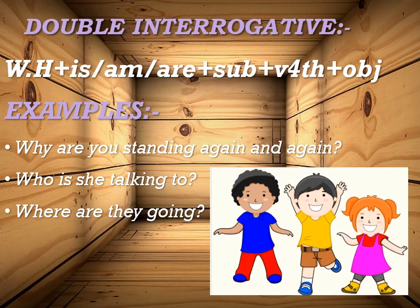So let's talk about its formula: WH word plus is/am/are plus subject plus verb fourth form plus object. Sabse pehle WH word ka use kiya jayega, then is/am/are according to subject, then subject, us ke baad verb fourth form yani ing form use ki jayegi, aur us ke baad object — object maujud ho bhi sakta hai, sentence object-less bhi ho sakta hai. Look at these examples: Why are you standing again and again? — Tum baar baar kyun khade ho rahe ho? Who is she talking to? — Woh kisse baat kar rahi hai? Where are they going? — Woh kahaan ja rahe hain? In sentences mein why, who, where — ye WH words hain. Uske baad is/are ka use according to subject kiya gaya hai, then subject add kiya gaya, then verb ke saath ing add kiya gaya. Aur yeh object-less sentences hain.